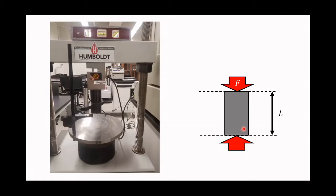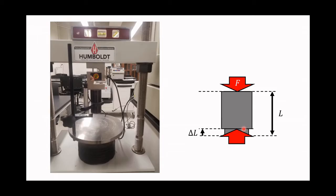As we apply the force, the sample is going to get shorter by an amount delta L. That amount delta L compared to the initial length gives us the strain. This is going to be combined with the stress, which is calculated as force over the area of the cylindrical sample.